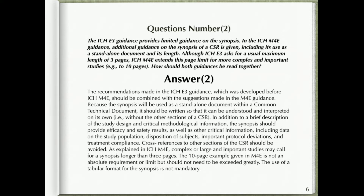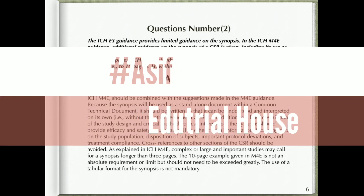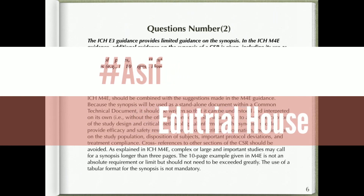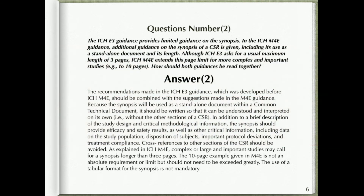Question number two: The ICH E3 guidance provides limited guidance on the synopsis. In the ICH M4E guidance, additional guidance on the synopsis of a CSR is given, including its use as a standalone document and its length. Although ICH E3 asks for a usual maximum length of three pages, ICH M4E extends this page limit for more complex and important studies, for example to 10 pages. How should both guidances be read together?